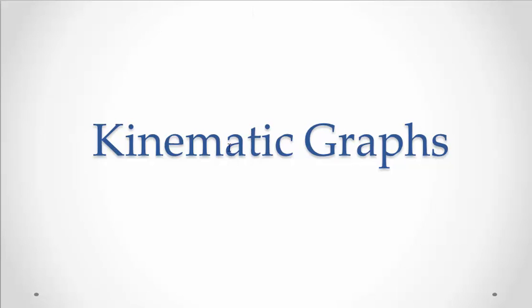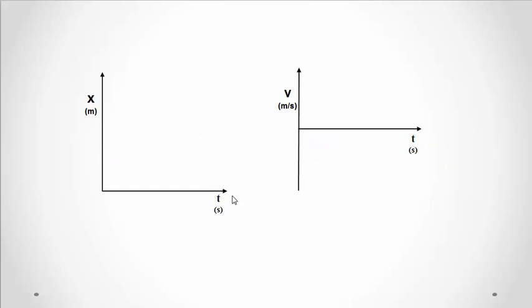Kinematic graphs are a great way to display the motion of an object and encapsulate all the information in a quick snapshot. We already looked a little bit at kinematic graphs for constant velocity, so let's review that. Let's say we have two different objects moving at constant speed, and the position-time graph for one of them looks steep, and for the other one it's not as steep.